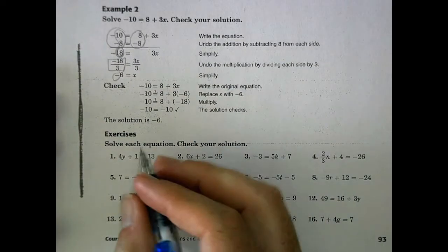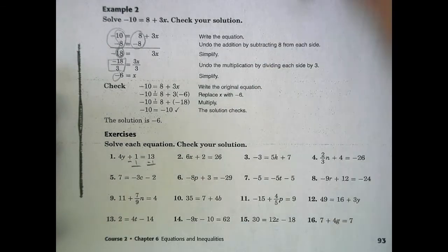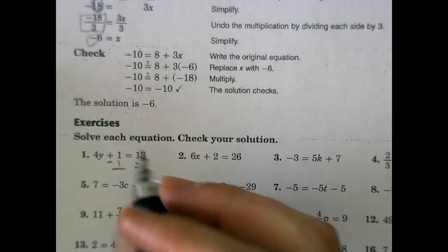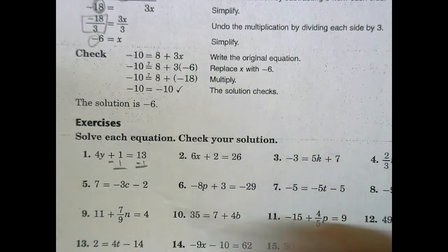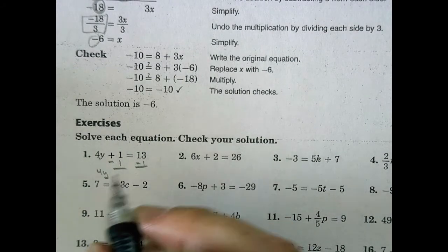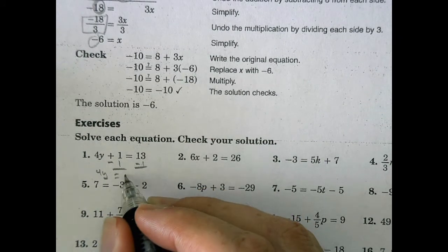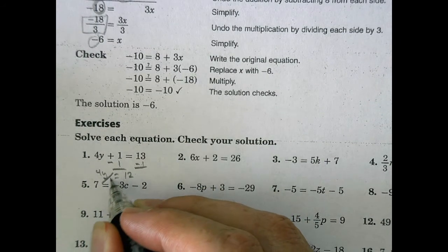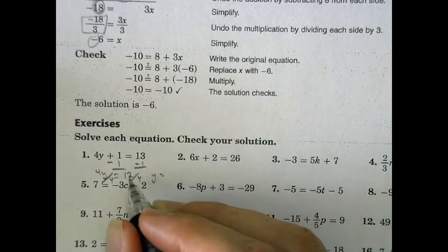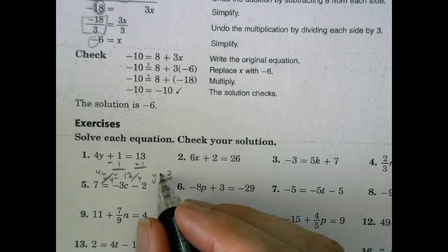Let's do some samples here together. On this first one, we're going to subtract 1 from both sides. I don't have a lot of space to work with here. On your case, you might want to use a different piece of paper. We end up with 4y equals 13 minus 1, which is 12. We would divide both sides by 4. Y then equals 12 divided by 4, which is 3.